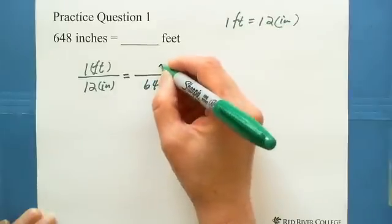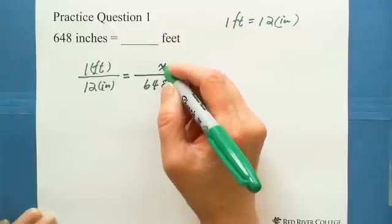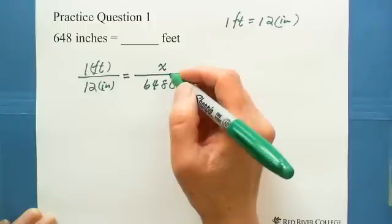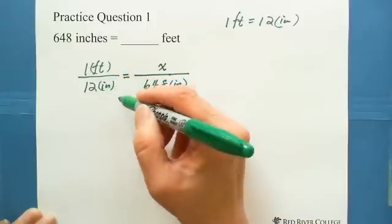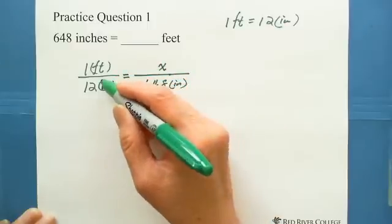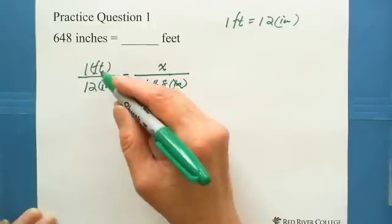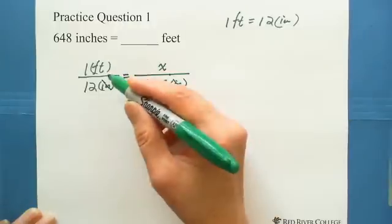Then we're looking for x. For x we're looking for, we don't need to put any units. Because when we perform this ratio proportion, we say inches and inches can be cancelled out. That's why you got x equals feet, the only unit here.